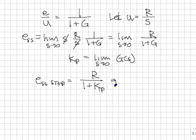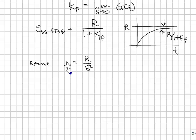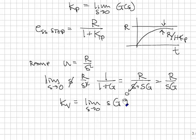This confirms: if G(s) has a pole at 0, it's a Type 1 system with zero steady-state error to a step input. For a ramp input, u = r/s², and following through with the final value theorem, one s cancels leaving r/(s + sG). As s goes to 0, the s term in the denominator vanishes, leaving r/(sG). The book defines kv as the ramp error constant: kv = lim(s→0) s·G(s). Therefore, the steady-state error to a ramp is r/kv.